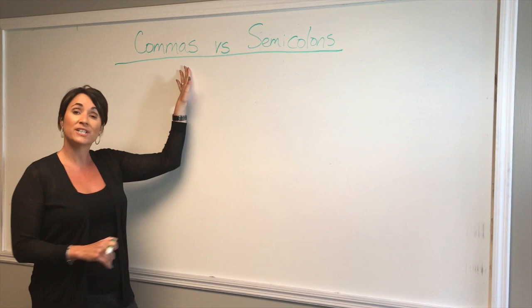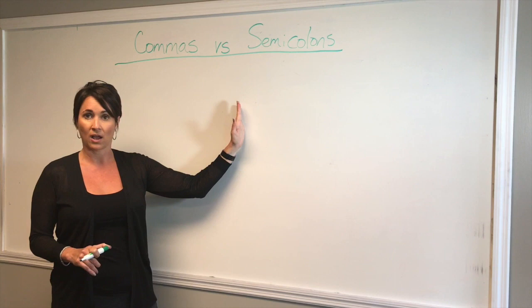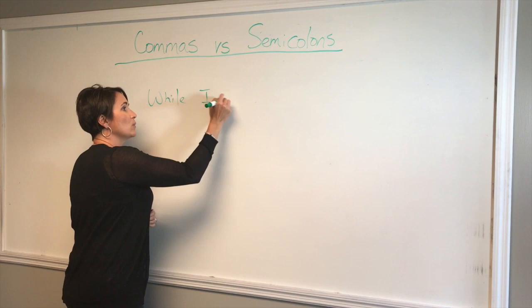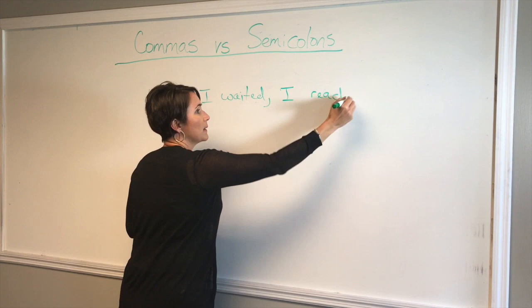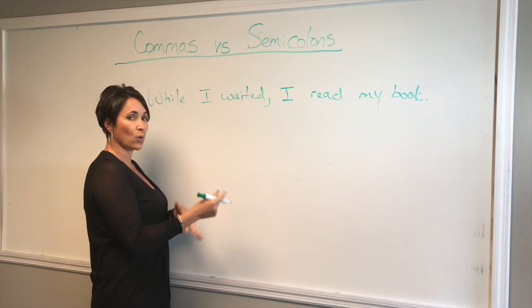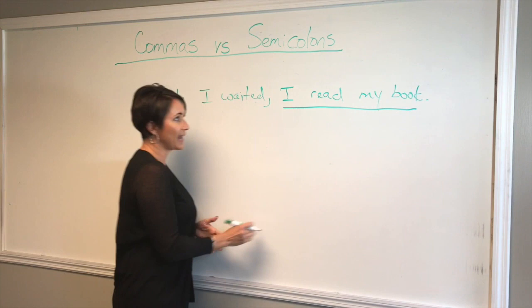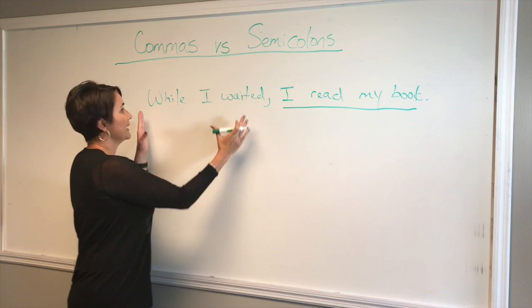So when we're dealing with commas, we're talking about separating a dependent clause with an independent clause. For example: while I waited, I read my book. The independent clause in this situation — the full sentence — is 'I read my book.' That has a subject, 'I,' and predicate, 'read my book.' The dependent clause is 'while I waited.'